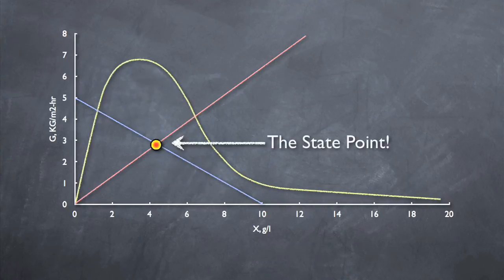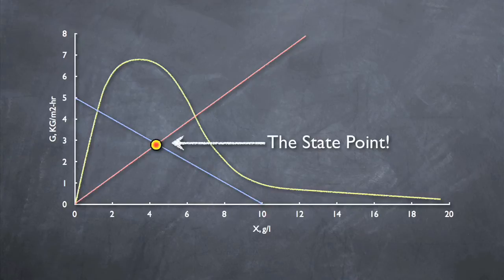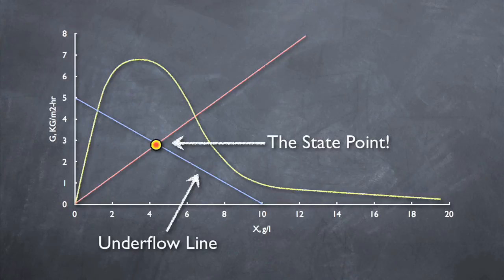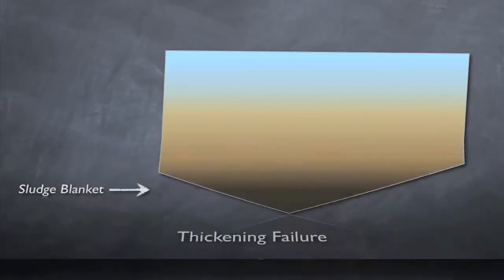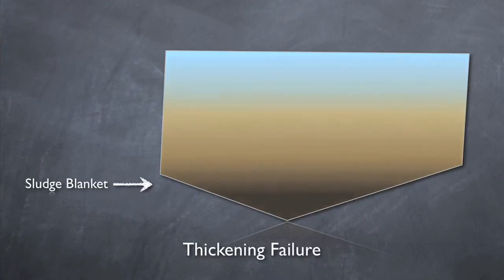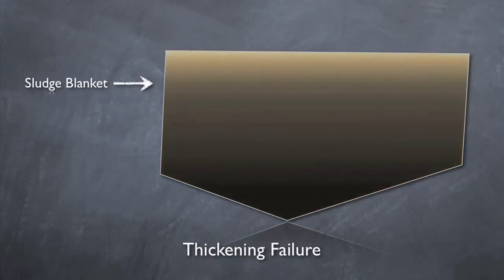However, getting the state point under the curve isn't the only goal. In order to ensure proper thickening of the sludge, we want to make sure that the entire underflow rate line to the right of the state point falls under the settling curve as well. If the state point is under the curve, but the entire underflow rate line isn't, the clarifier is failing in thickening. This means that sludge is settling in the clarifier, but isn't being removed fast enough. Under these conditions, the sludge blanket would rise in the clarifier until solids are passing over the weir.